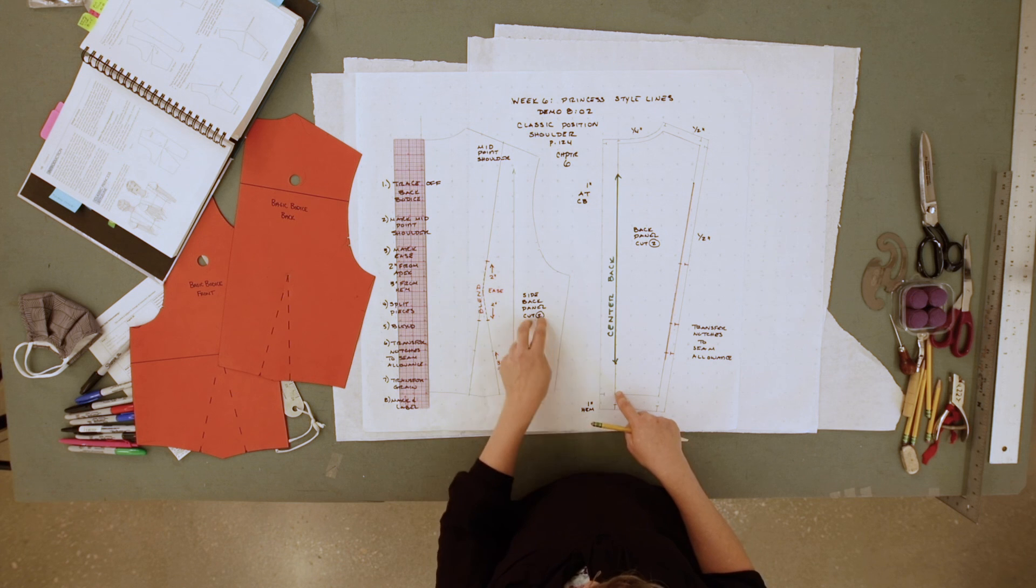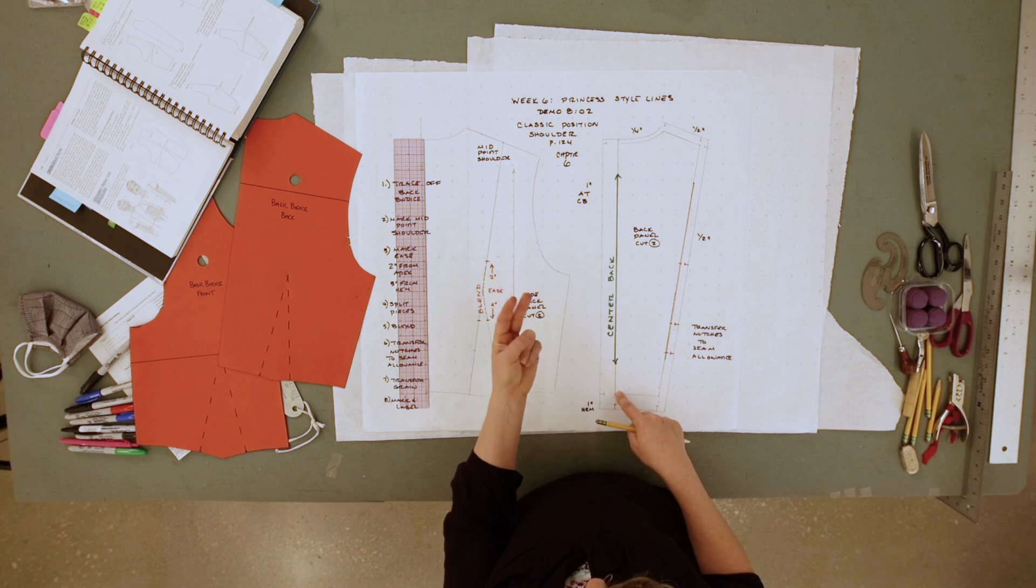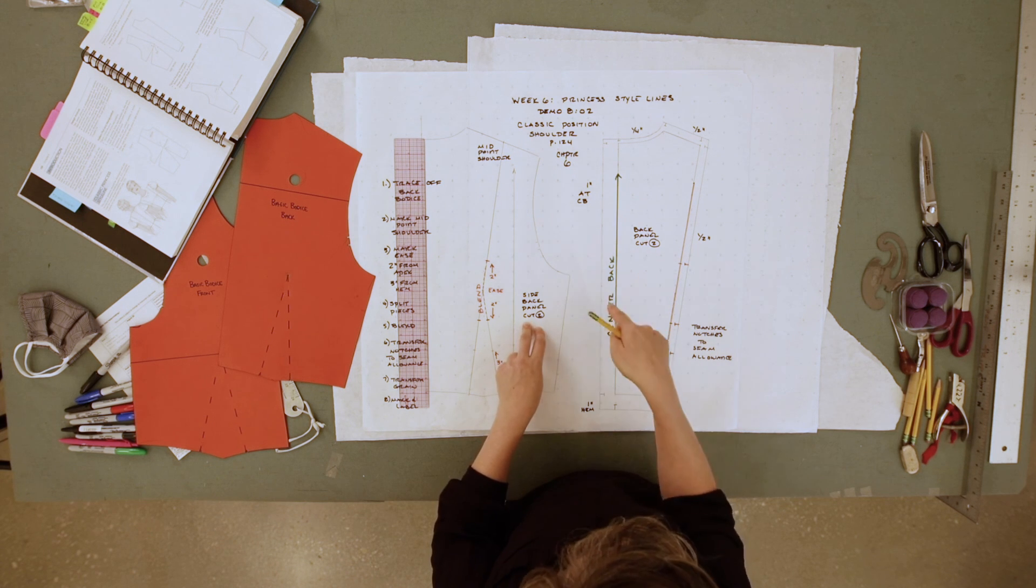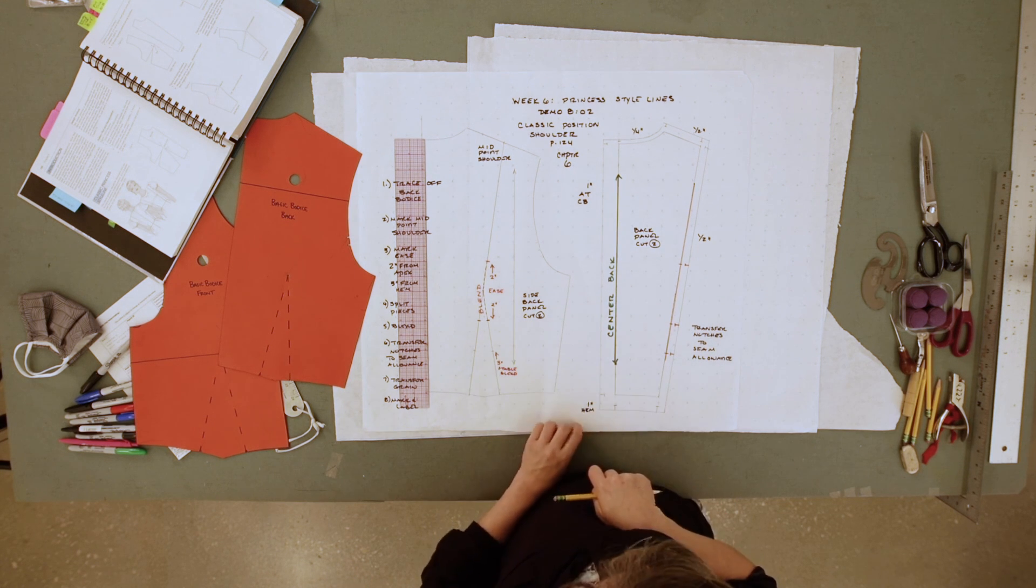We want to make sure that we're noting that the side back panel you need to cut two, and that this back panel we also need to cut two because we need to make sure we're putting in our zipper.